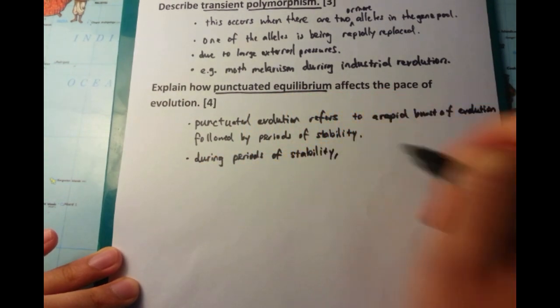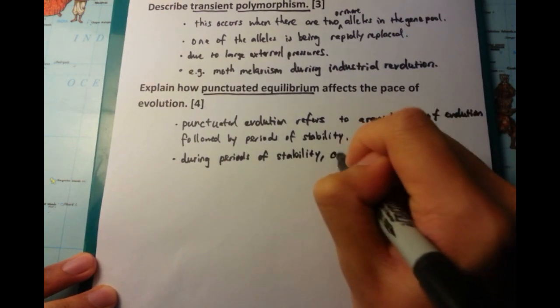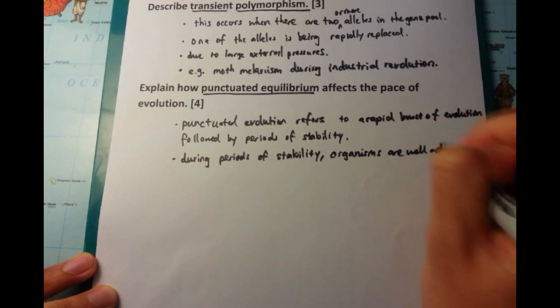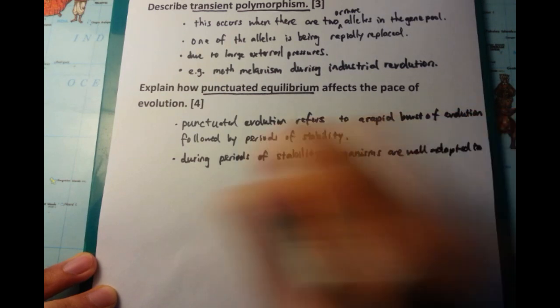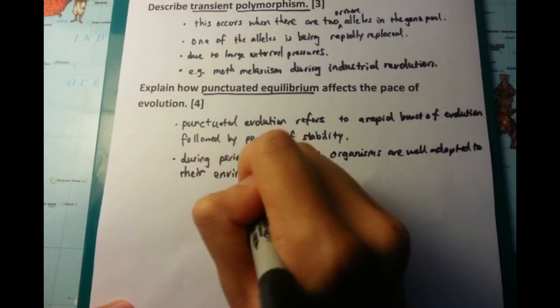During periods of stability, organisms are well adapted to the environment. They've got all the features that they need to survive. And because of that, the theory proposes that these organisms don't need to continue to evolve, because they're relatively happy, they're well adapted to their environment.